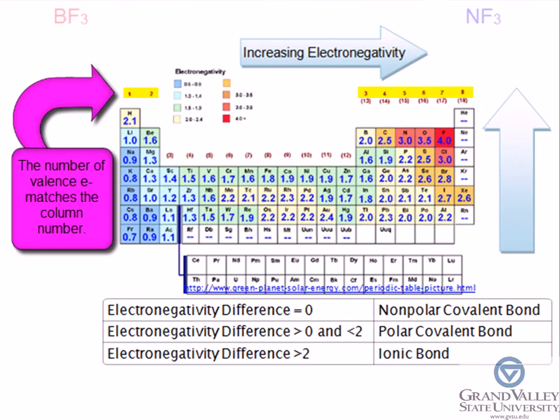Refer to the periodic table of elements to find these values. In BF₃, the total number of valence electrons is 24: 3 electrons from boron and 7 electrons from each fluorine atom.